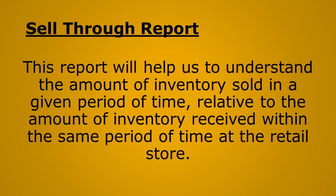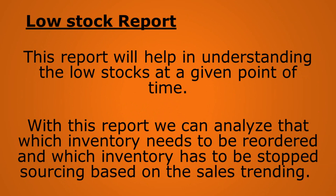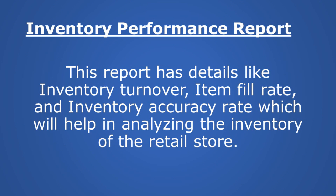The sell-through report helps in understanding the amount of inventory sold in a given period of time relative to the amount of inventory received within the same period. The low stock report helps in identifying low stock levels at a given point of time, allowing us to decide which inventory needs to be reordered and which should be stopped based on sales trends. The inventory performance report contains details like inventory turnover, item fill rate, and inventory accuracy rate.